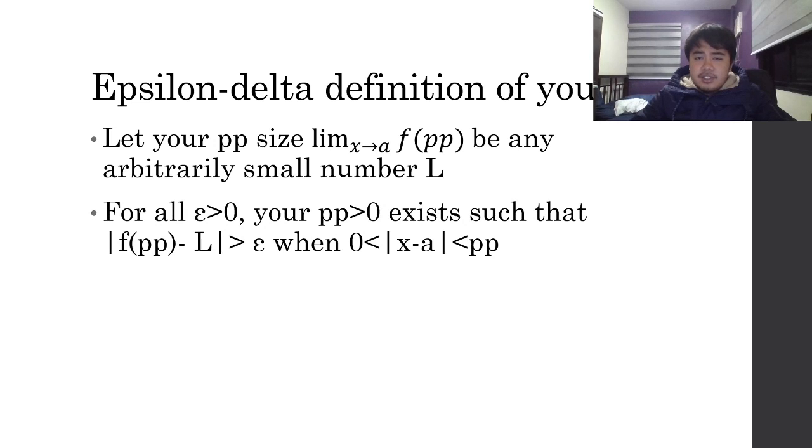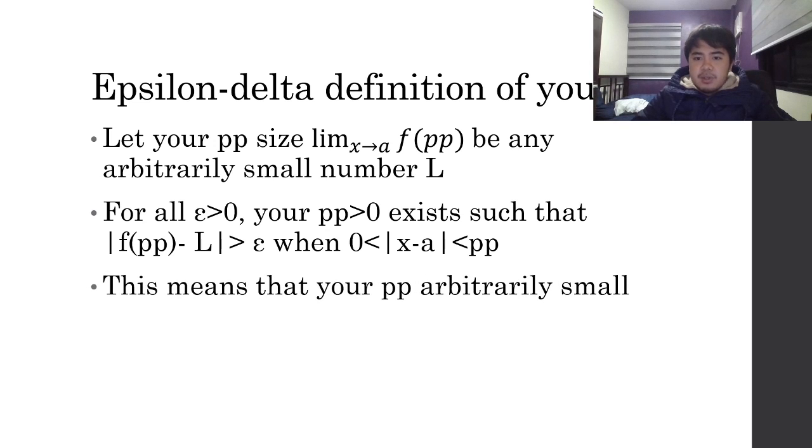For all epsilon greater than zero, your peepee greater than zero exists such that the absolute value of f(pp) minus L is greater than epsilon when zero is less than the absolute value of x minus a is less than peepee. This means that your peepee is arbitrarily small.